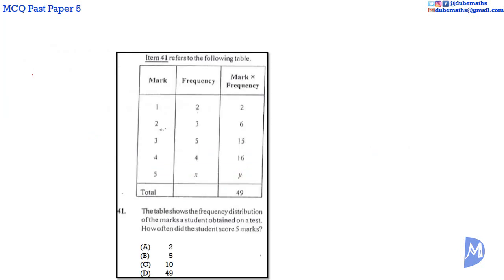Question 41. In this frequency distribution table, two unknown values are represented as X and Y. We are asked to find out how often did the student score five marks. We are asking to find out the value of X.